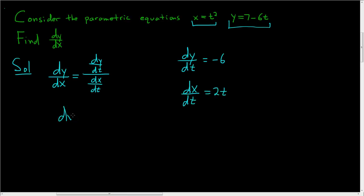So dy dx is equal to dy dt, which is negative 6, divided by dx dt, which is 2t.